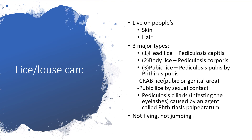Lice live on people's skin or hair and there are three major types. Head lice is called pediculosis capitis, body lice is called pediculosis corporis, and pubic lice is pediculosis pubis — also known as Phthirus pubis. In the literature you can find crab lice, referring to the pubic or genital area, and pubic lice are transmitted by sexual intercourse. Pediculosis ciliaris infests the eyelashes.